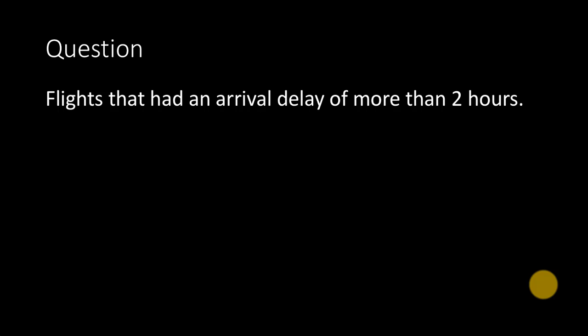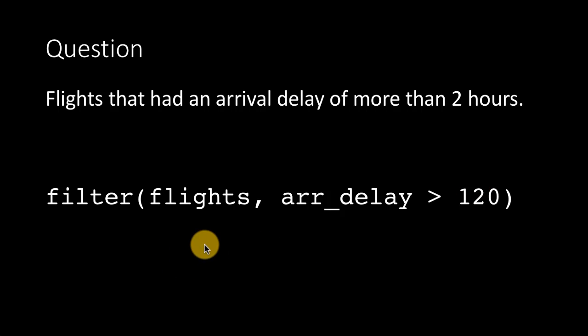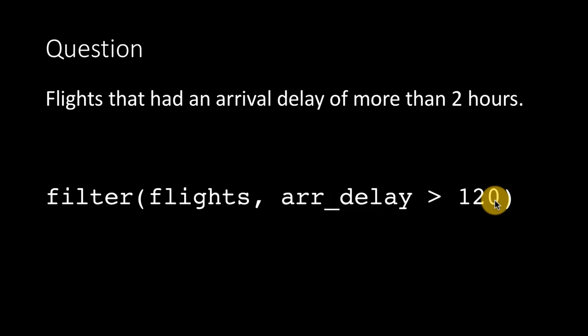Let us apply these logical operators. Suppose we want to find flights that had an arrival delay of more than two hours. We filter the tibble 'flights' for this condition. Looking at the data, all delays — arrival delay, departure delay, etc. — are in minutes, not hours. So we write filter(flights, arr_delay > 120), because two hours equals 120 minutes. We use strictly greater than, not greater than or equal to, since we said 'more than two hours.'